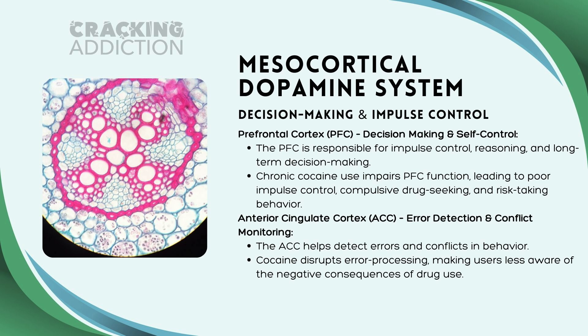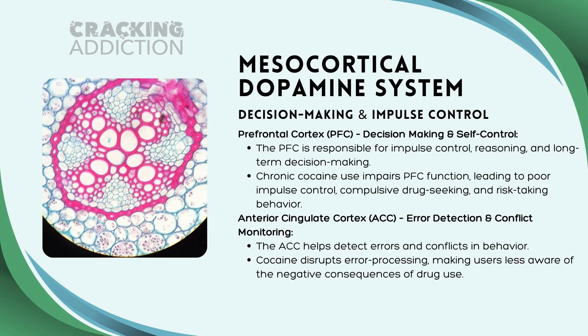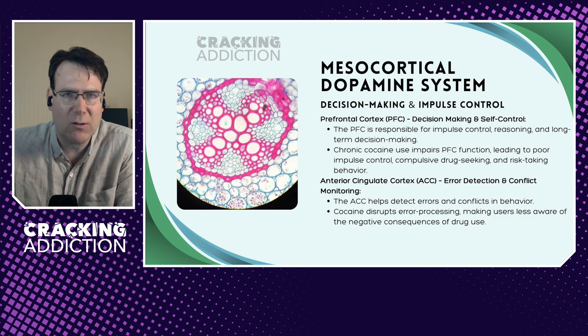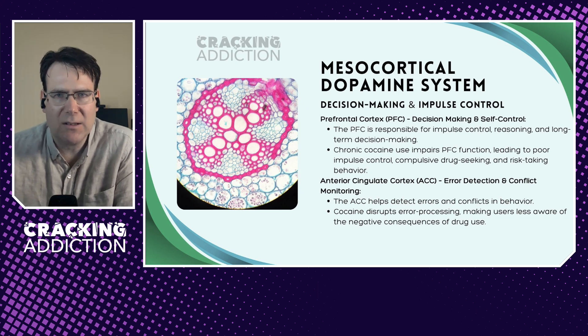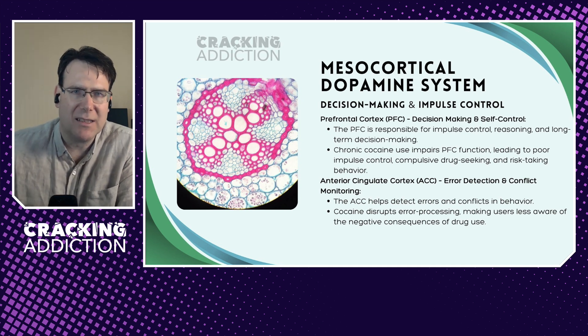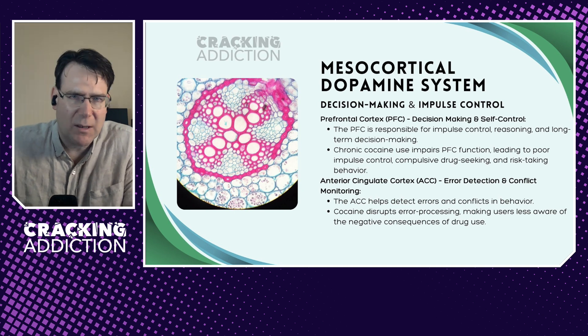Now let's look at the mesocortical dopamine system — the decision-making and impulse control system. This describes the connection between the midbrain and the prefrontal cortex, where decision-making and self-control occur. The prefrontal cortex, or PFC, is responsible for impulse control, reasoning, and long-term decision-making. Chronic cocaine use impairs prefrontal cortical functioning, leading to poor impulse control, compulsive drug-seeking, and risk-taking behavior. The anterior cingulate cortex, or ACC, processes errors and monitors conflict. Cocaine disrupts error processing, making users less aware of the negative consequences of their drug use.